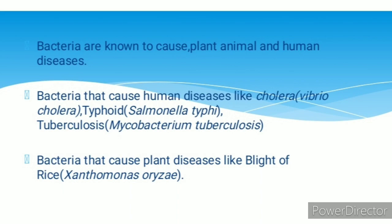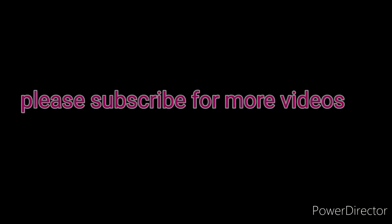Examples of human diseases caused by bacteria: cholera is caused by Vibrio cholerae; typhoid is caused by Salmonella typhi; tuberculosis is caused by Mycobacterium tuberculosis. Bacteria also cause plant diseases such as blight of rice caused by Xanthomonas oryzae, and citrus canker by Xanthomonas. In the next video, we are going to study about viruses.